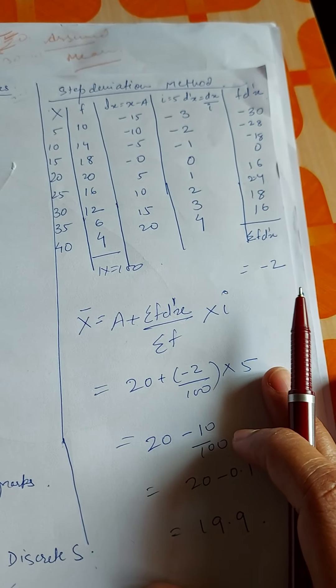Now we calculate the next column, that is fdx, which is f into dx. So: 10 into minus 15 is minus 150; 14 into minus 10 is minus 140; 18 into minus 5 is minus 90; 20 into 0 is 0; 16 into 5 is 80; 12 into 10 is 120; 6 into 15 is 90; 4 into 20 is 80. We keep the negative numbers on one side and positive on the other side and subtract, so sigma fdx equals minus 10.